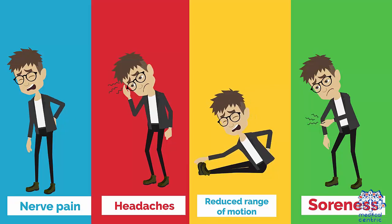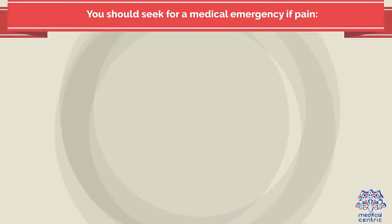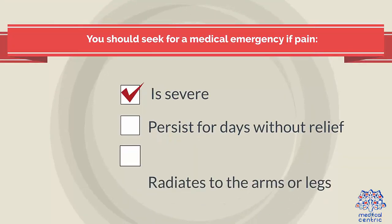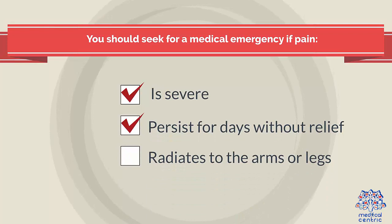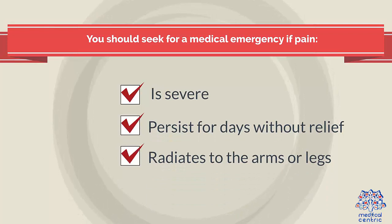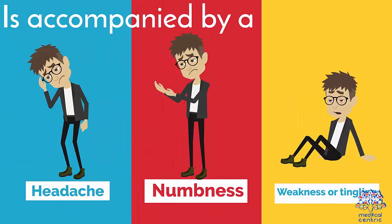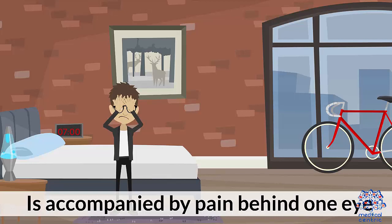You should seek help for a medical emergency if pain is severe, persists for days without relief, radiates to the arms or legs, is accompanied by a headache, numbness, weakness, or tingling, or is accompanied by pain behind one eye.